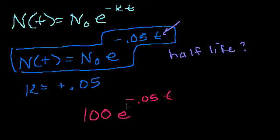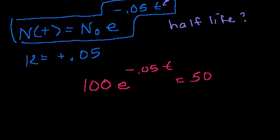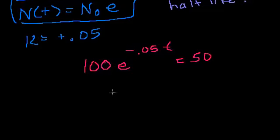t is whatever our half-life. So after our half-life, we're going to have half of this stuff left. So this should be equal to 50. We just solve for t. Divide both sides by 100. You get e to the minus 0.05t is equal to 1 half.